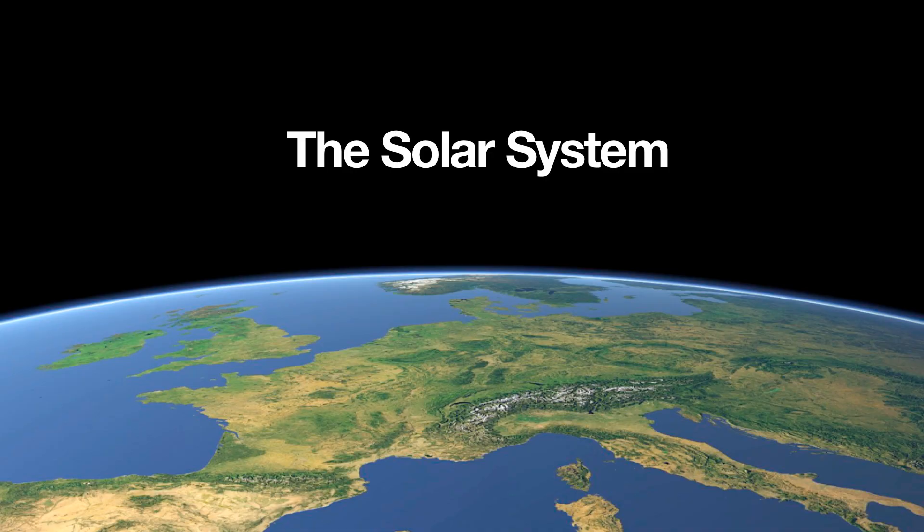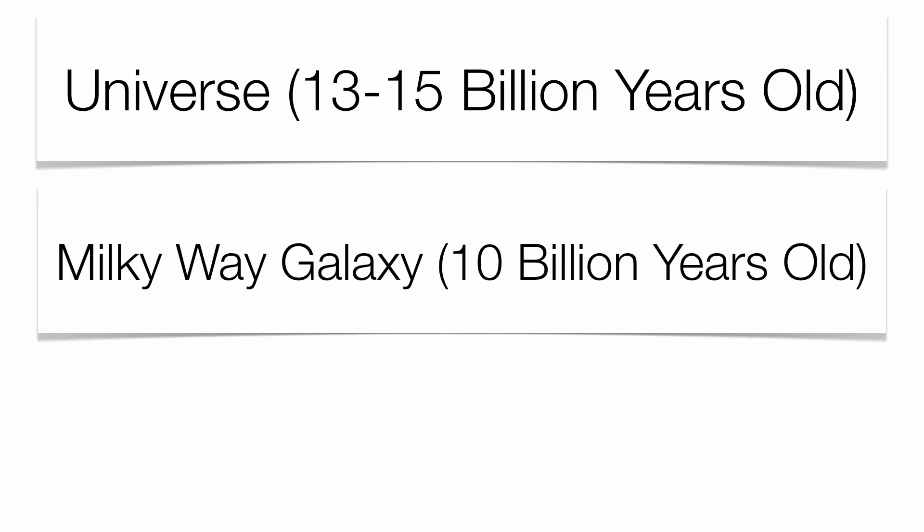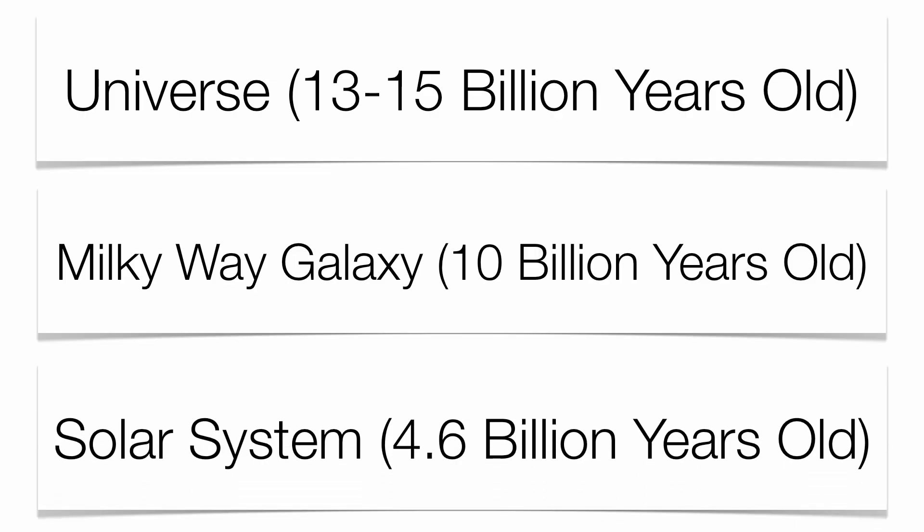In order to understand the solar system, we have to have an idea in terms of how old the solar system is. Our universe is between 13 to 15 billion years old, Milky Way galaxy is about 10 billion, and our solar system is a mere 4.6 billion.